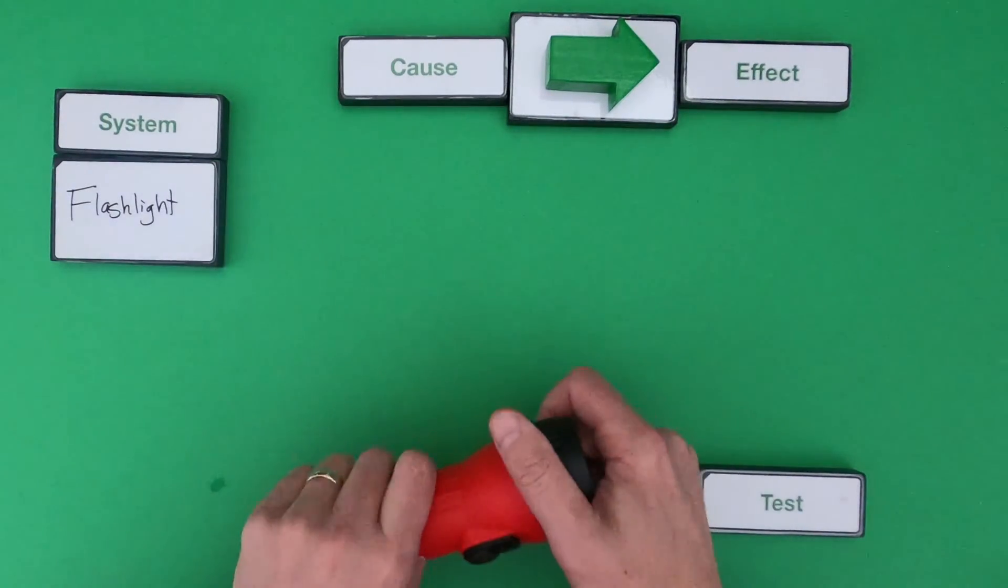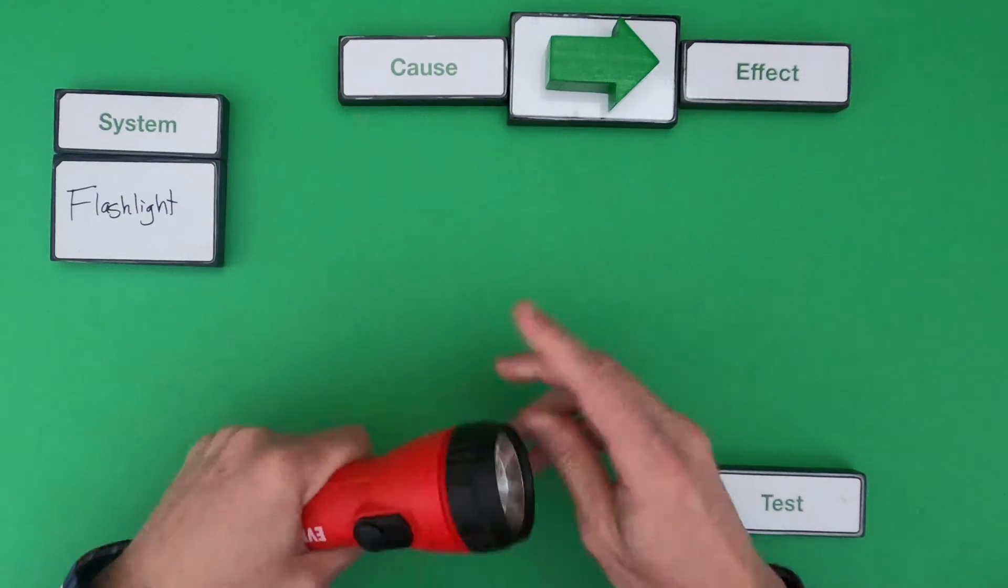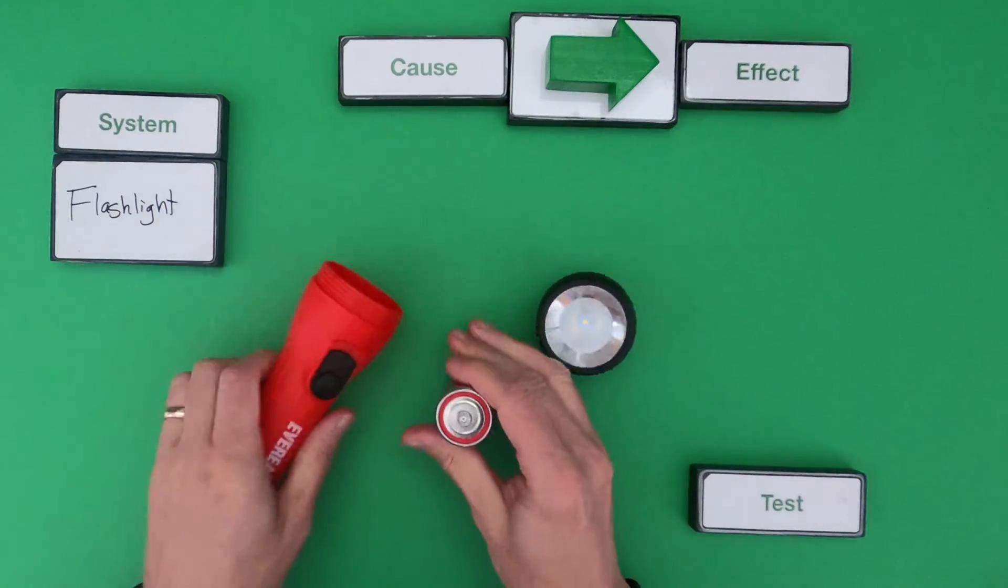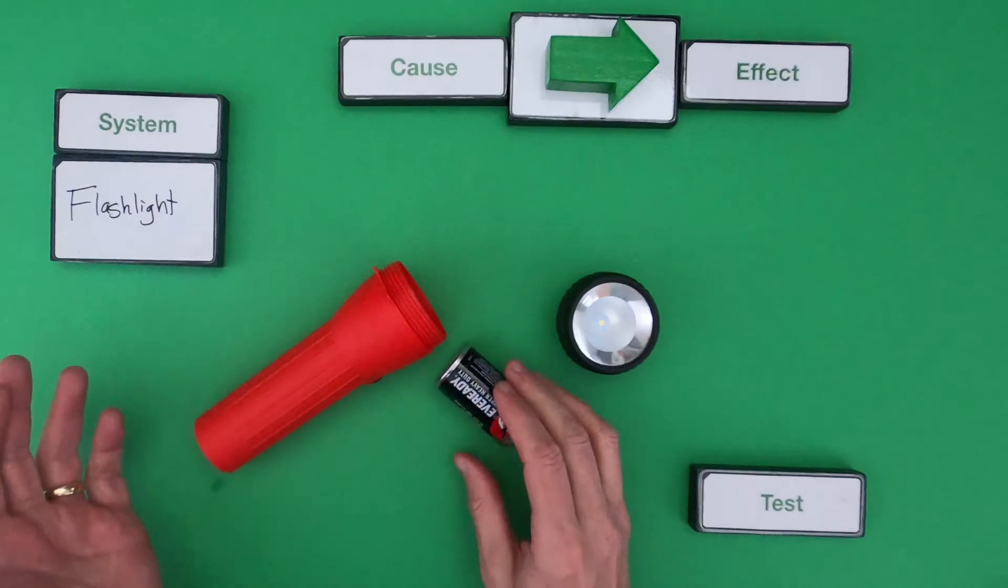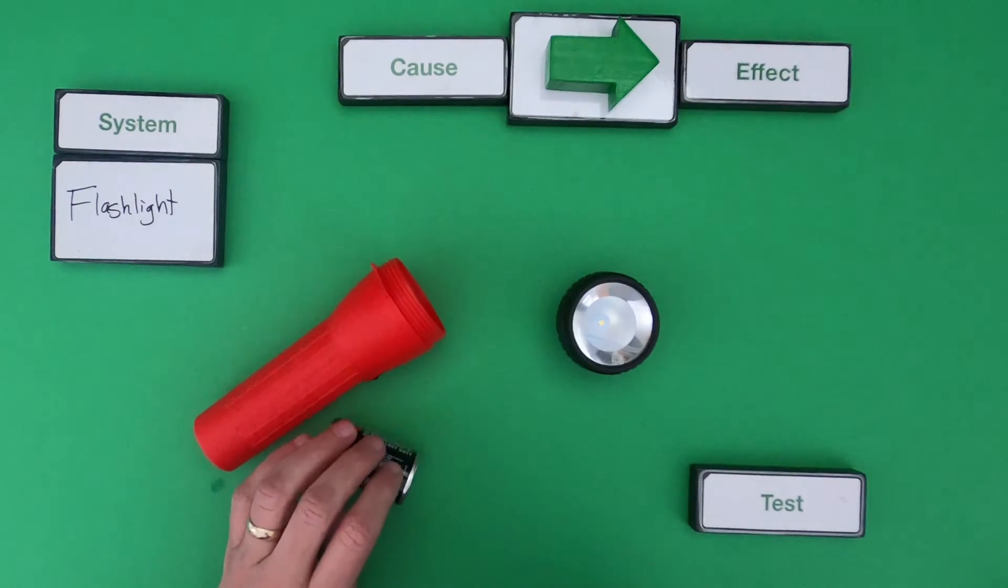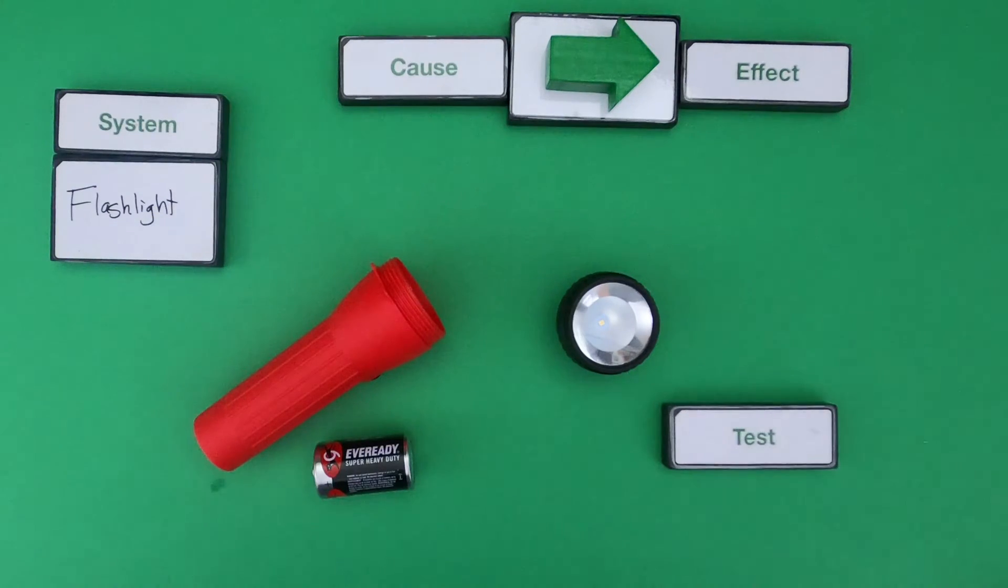And what I want you to do is write out what's the effect, what's some possible causes, and then how would you develop a fair test that you could test it out. I wanted to show you some of the parts of the system. We've got a lamp, we've got a battery. And so pause the video and what I want you to do is write out what's the effect, what's the causes, and then how would you develop a possible test. And when you come back, I'm going to show you how I would think about this system.